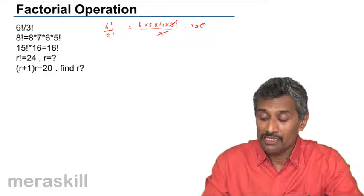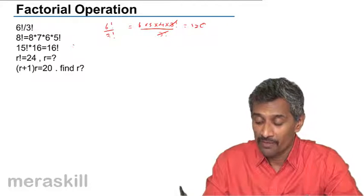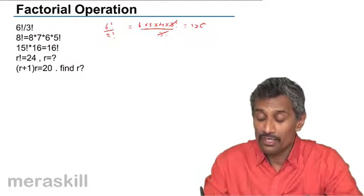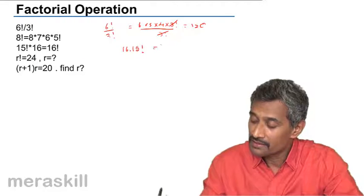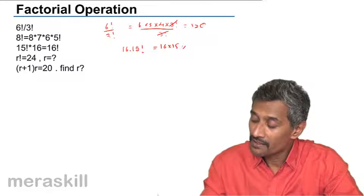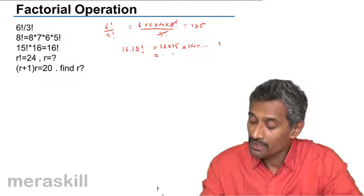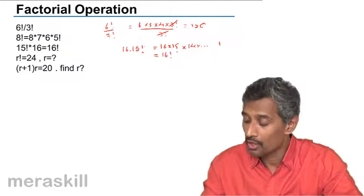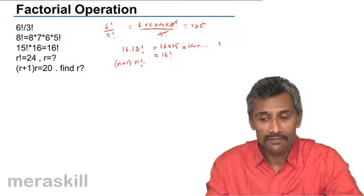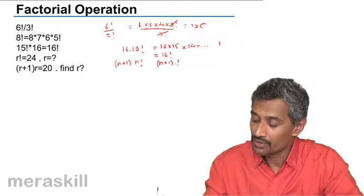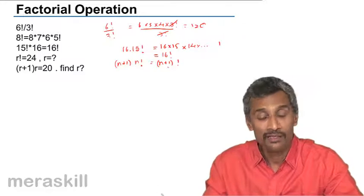Similarly, 8! can be written as 8 × 7 × 6 × 5 × 4 × 3 × 2 × 1, which is the same as using 5!. Also, 15! × 16 = 16 × 15! = 16!. So in short, (n+1) × n! = (n+1)!. This is an important identity.